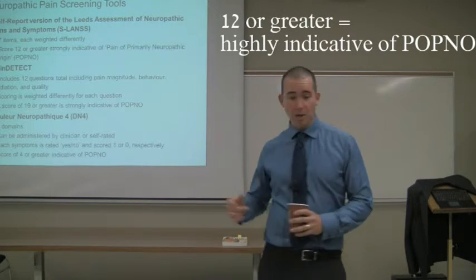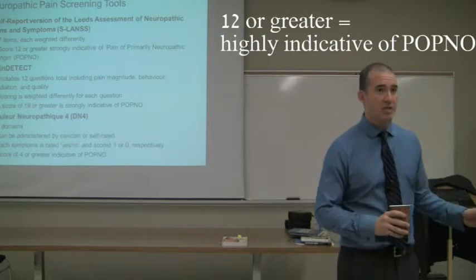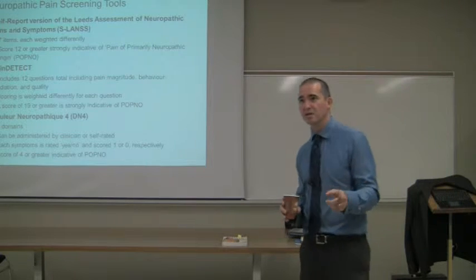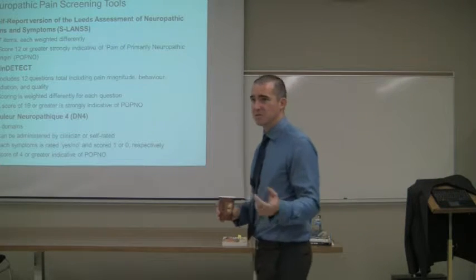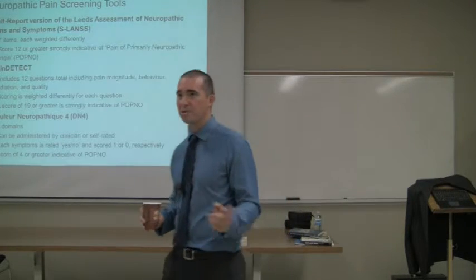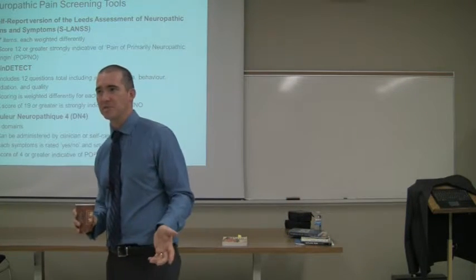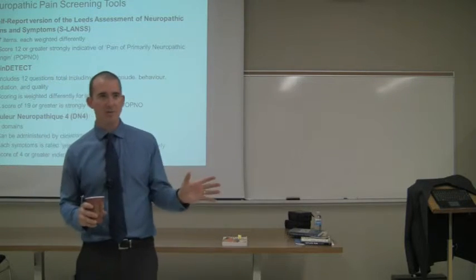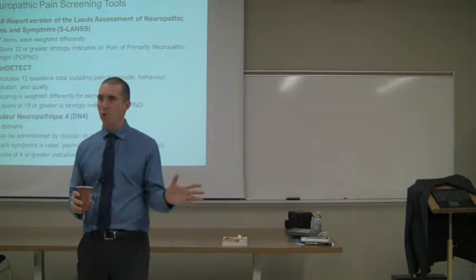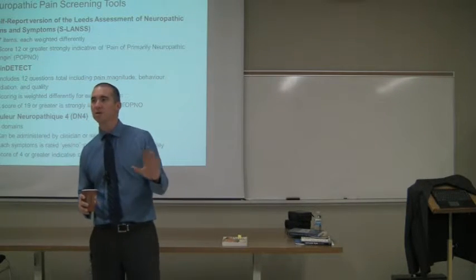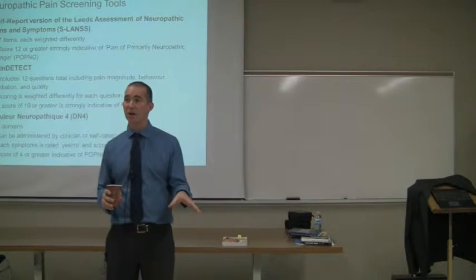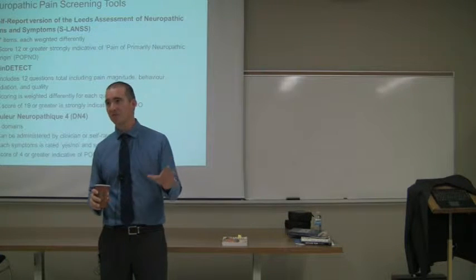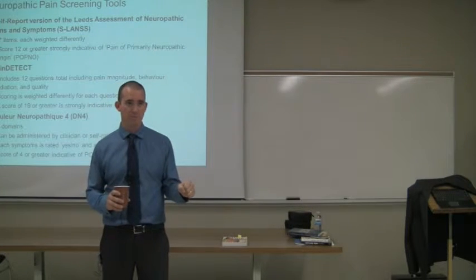If you look at the scale itself, you'll see that each yes is scored a little differently — sometimes it's worth one point, sometimes three, sometimes five. So regardless of how they score yes or no on individual items, a score of 12 or higher is suggestive of pain of primarily neuropathic origin.